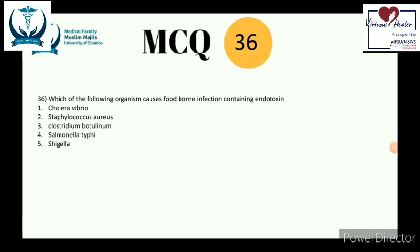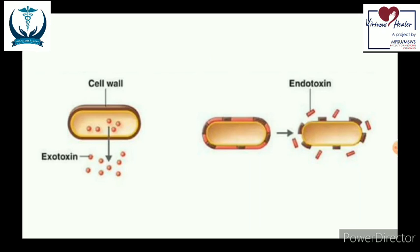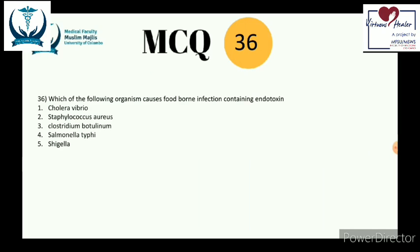Question 36: which organism causes foodborne infection containing endotoxin? An exotoxin is a protein synthesized within the cell and released by exocytosis into the environment. An endotoxin is a component of the surrounding cell wall of the bacteria. From the list, the organism that releases endotoxin is Salmonella typhi — the answer is number 4.